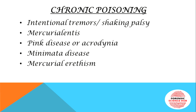Now chronic exposure — these are some important findings that can be asked in exams. First is intentional tremor, also known as shaking palsy. It first occurs in the hands, then progresses to the lips and tongue, and finally reaches the arms and legs. In the advanced stage, the person is unable to dress, walk, or write properly. These are also called hatter's shake or glass blower's shake because they are common in people working with mercury in glass blowing or hat-making factories.